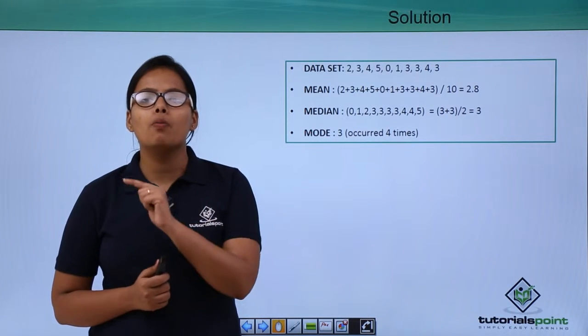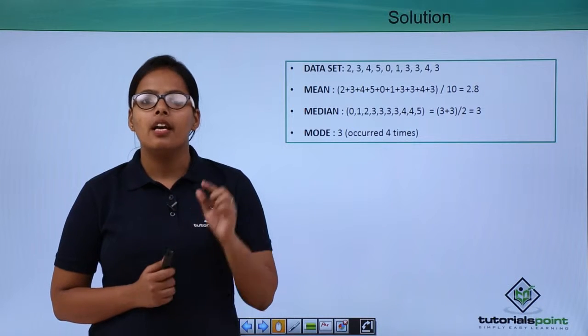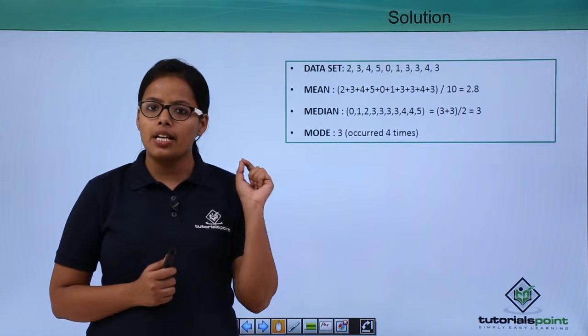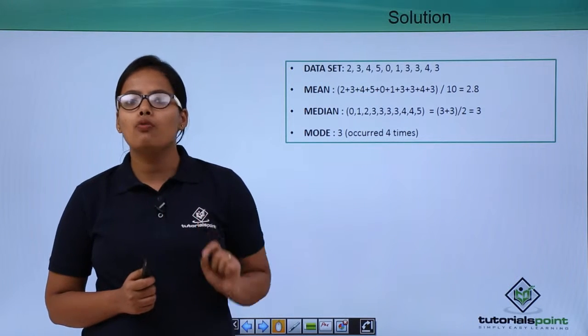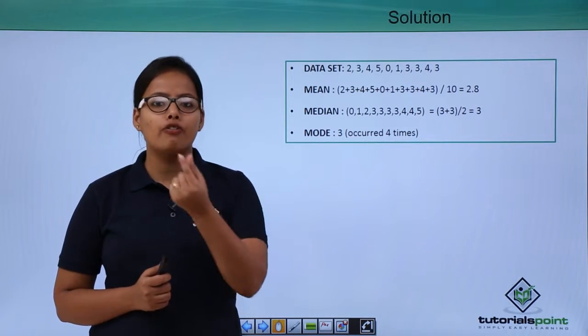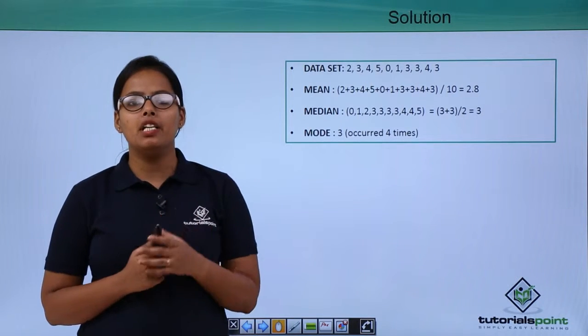n by 2, n plus 2 by 2. These are the ranks. n is 10 here because there are 10 number of entries. 10 by 2 will be 5 and 10 plus 2 by 2 will be 6. So values which are lying at the rank of 5th and 6th will be the median for this.